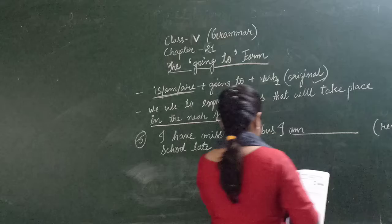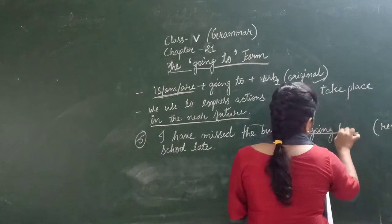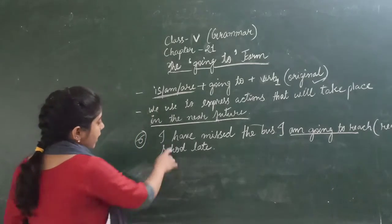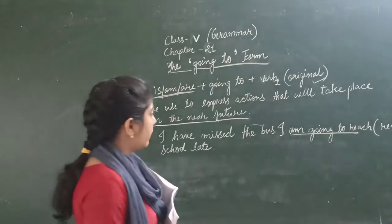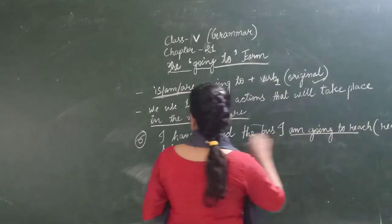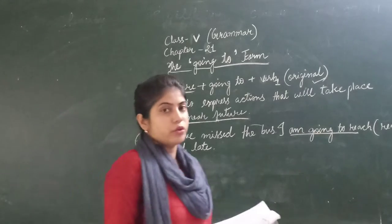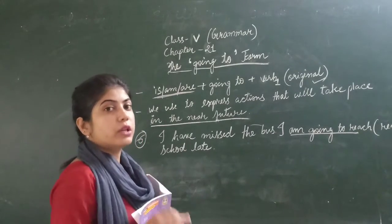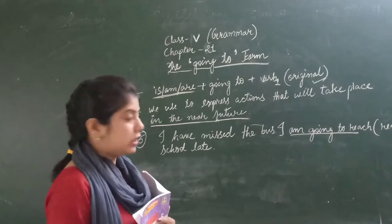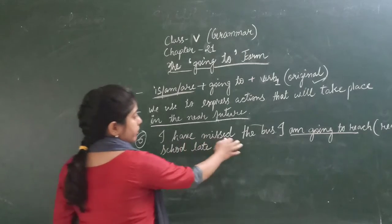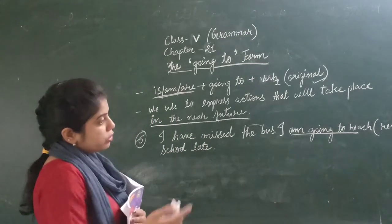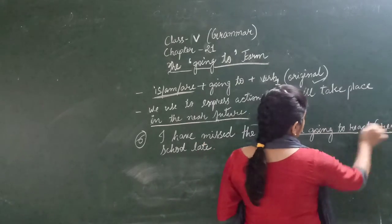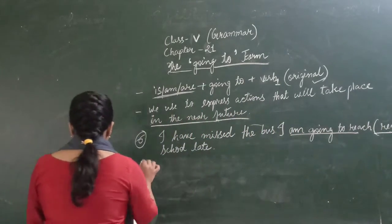The complete sentence is: I have missed the bus, but I am going to reach school late. There is a surety about that — in the near future this is going to happen. He is going to reach school late because he has missed the bus. You need to make no change to the verb form — it stays in the original form: reach.